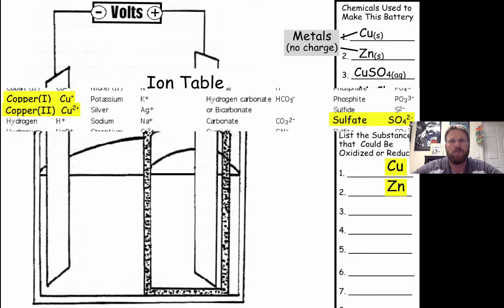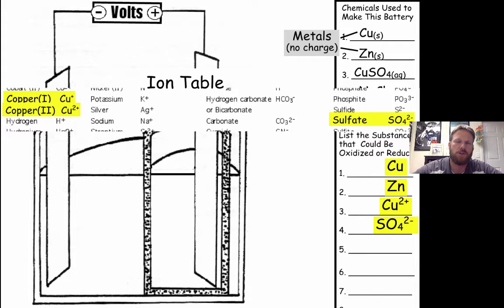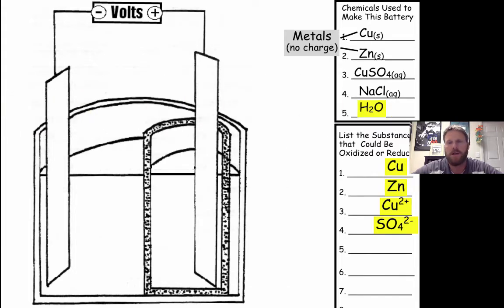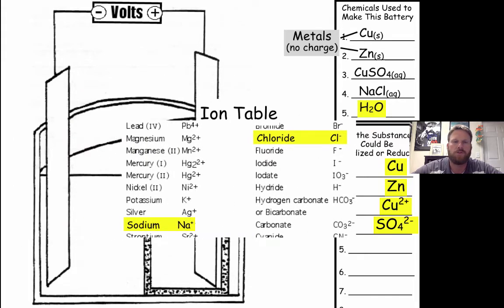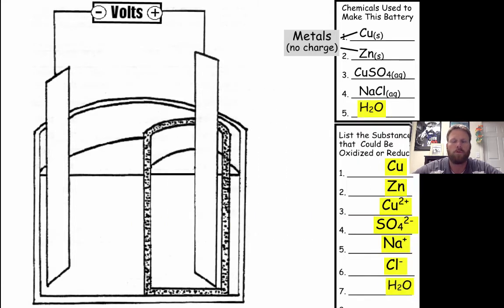Copper sulfate contains SO₄²⁻ ions. Because of the 2-minus charge, we know the copper used must be Cu²⁺, since we have a formula of CuSO₄. So Cu²⁺ and SO₄²⁻ go into our list. Sodium chloride is composed of Na⁺ and Cl⁻ ions.